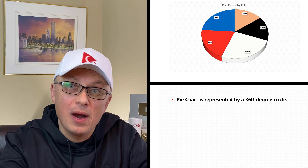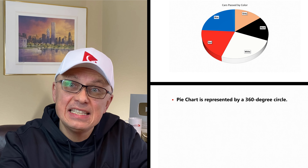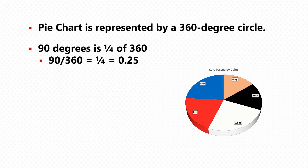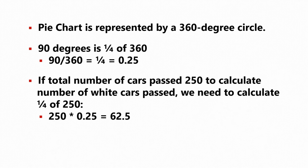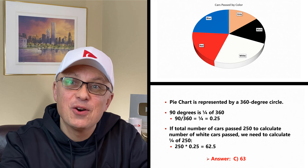To do the calculations, you need to divide 90 by 360, which is a quarter or 0.25. We build a proportion: the total number of cars is 250, represented by the full 360-degree circle. To calculate the number of white cars, we multiply 250 by 0.25, giving 62.5. The closest value among the answers is 63, so the correct choice is C.